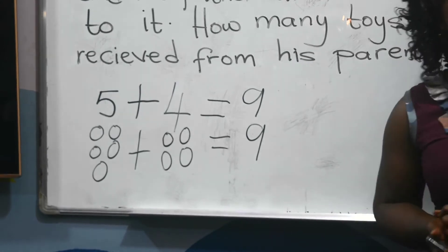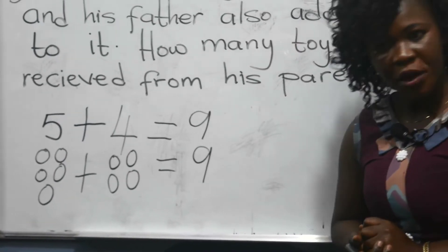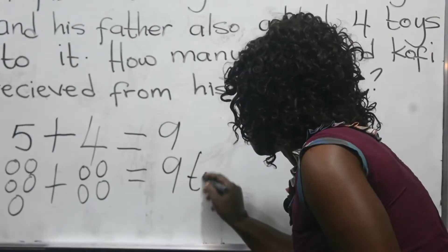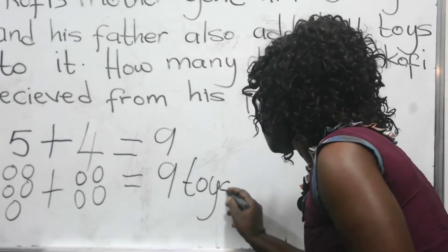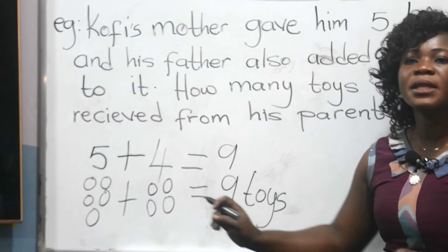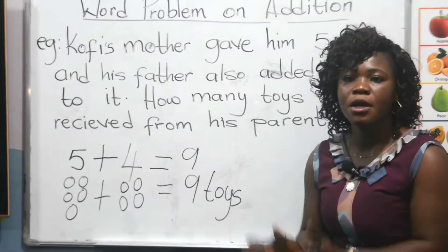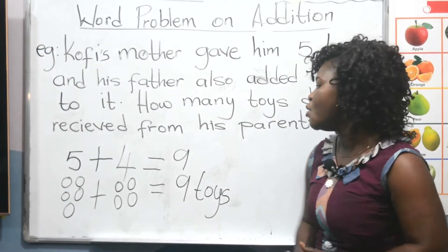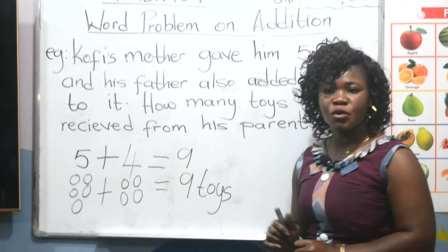Nine what? Nine toys. Don't forget — nine toys. So therefore, when we have five toys then we add four toys to it, in all when we put all together, we get nine toys.